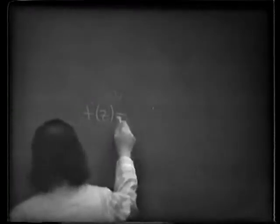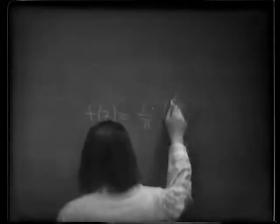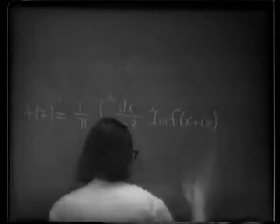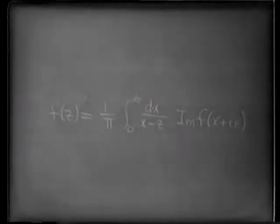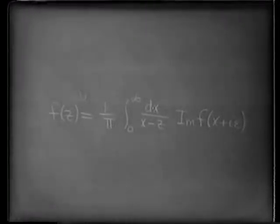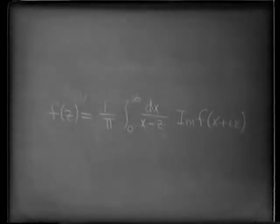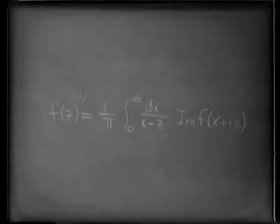I'll just write our prototypical dispersion relation for a function f obeying conditions 1, 2, and 3. We have encountered equations of this form earlier in this course: the Lehmann spectral representation for the propagator is also an equation of this form, although we didn't derive it by things that had anything to do with causality. Nevertheless, it came out being an equation of the same shape. And in subsequent lectures, we will also derive many equations of the same shape.